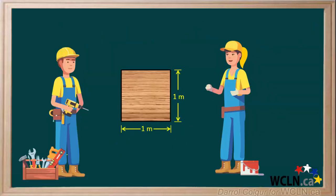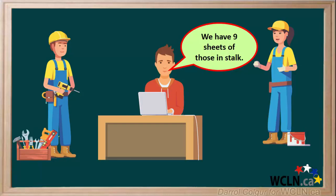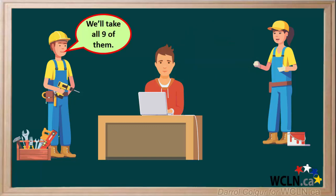Here's a little example that illustrates what we can do with the square root. These two have gone to a builder's supply store and found a sheet of plywood they would like to build a deck with. 1 sheet is 1 meter long and 1 meter wide. They want to buy all the sheets that are available. They are told there are 9 sheets of this in stock, so they agreed to buy all 9 of them to put them on the surface of the deck they built.